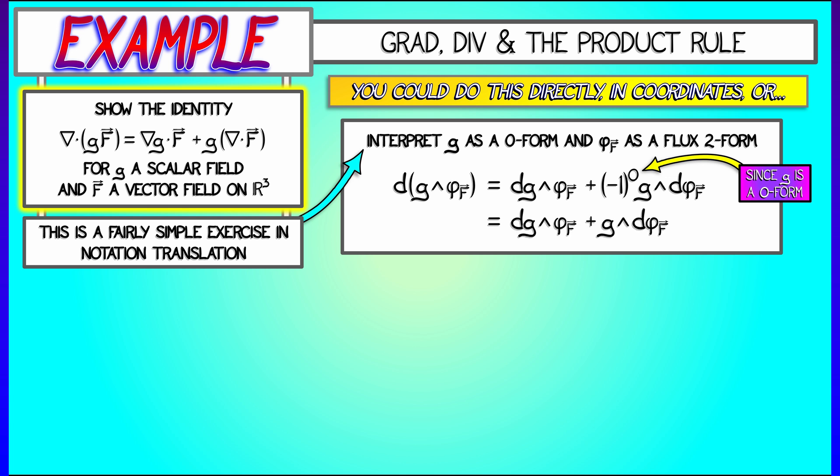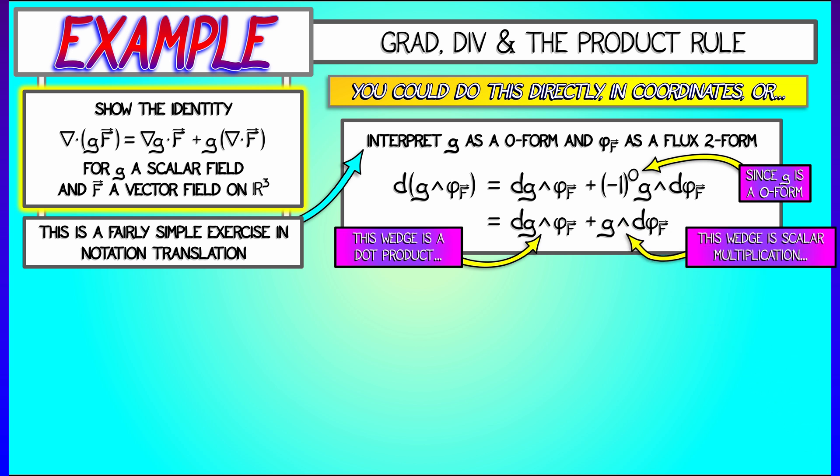Okay, so this simplifies to dg wedge phi sub f plus g wedge d phi sub f. Now, that first wedge product is really a dot product because I've got a one-form field, dg, and then I've got phi sub f, a two-form field. On the other hand, that second wedge product is just scalar multiplication because g is a zero-form field. d phi sub f is really the divergence. Okay, so that makes sense then.